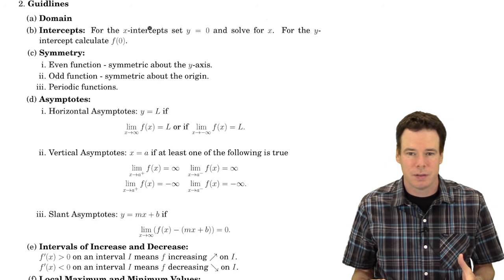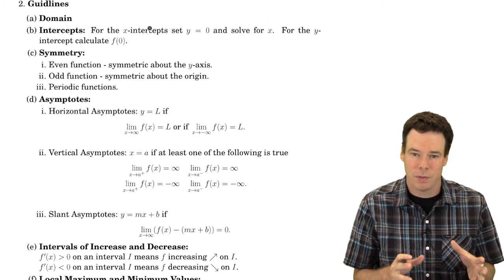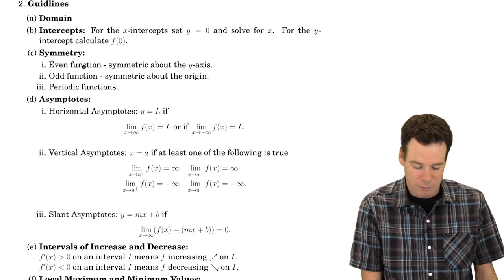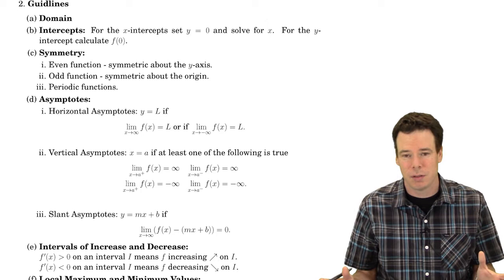If we can exploit any symmetry that the function has, then that's really helpful because it means we only have to sketch the graph for a portion of the domain and then we can extend it by its symmetry to the rest of the domain. So if we can find any odd, even, or periodic symmetries, then that's helpful as well. Not necessary, but it is helpful.